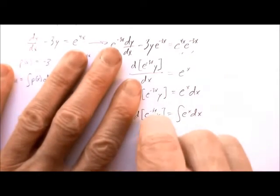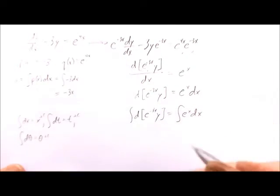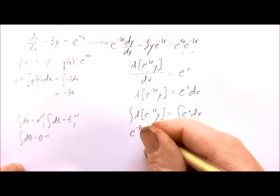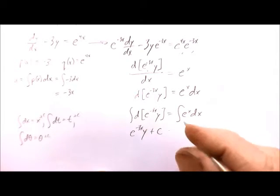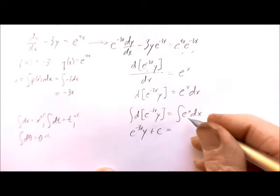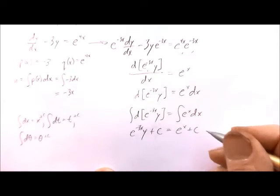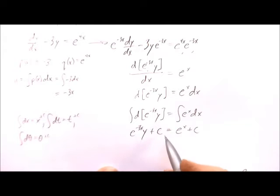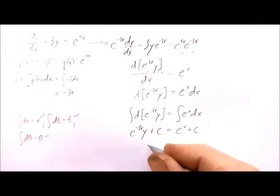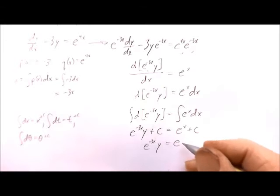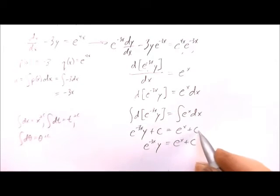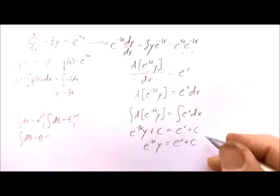That gives us e^(−3x) · y plus a constant on the left side. On the right side, the integral of e^x is e^x plus C. These are different constants, but when we subtract one from the other, we end up with e^(−3x) · y equals e^x plus C, where this C is the difference of the two constants.